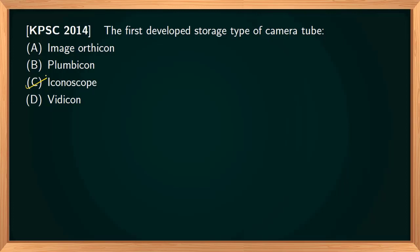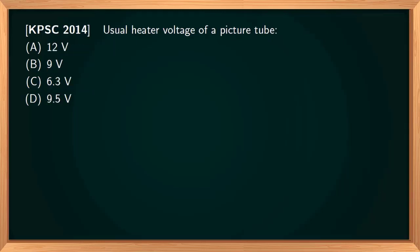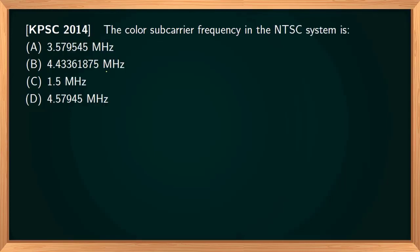The first developed storage-type camera tube is the iconoscope — correct option is C. In the next question, the heater voltage of a picture tube is 6.3 volts.